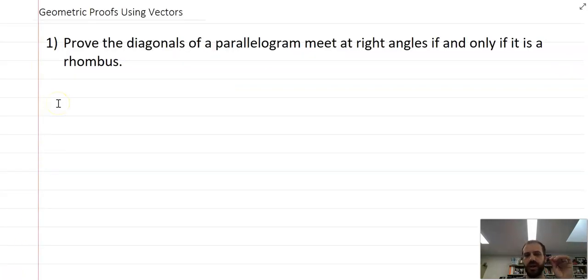Here's our first one: Prove the diagonals of a parallelogram meet at right angles if and only if it is a rhombus. You might want to pause the video here and try it. But before you do, just remember this is geometric proofs using vectors. So if your proof doesn't use vectors, then it's not the right proof.